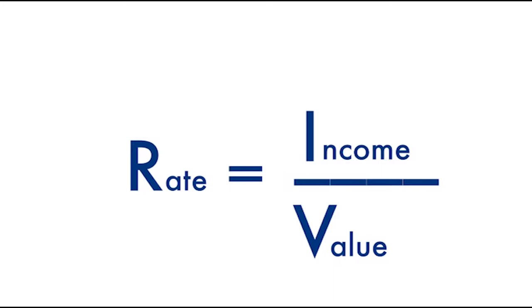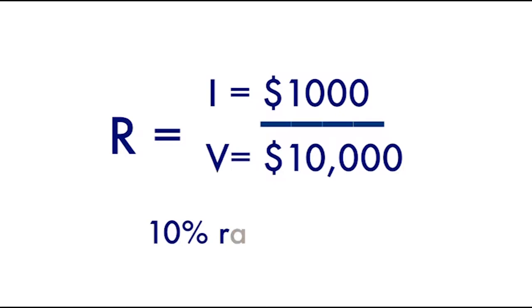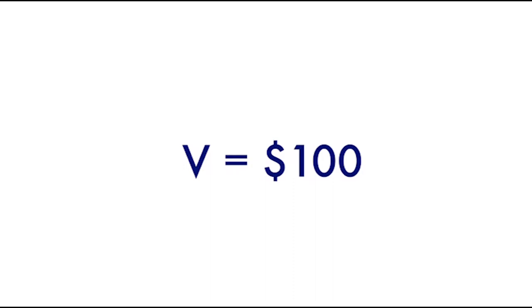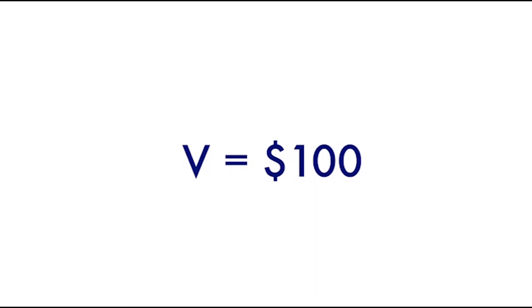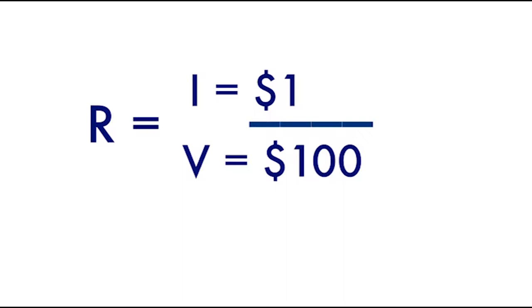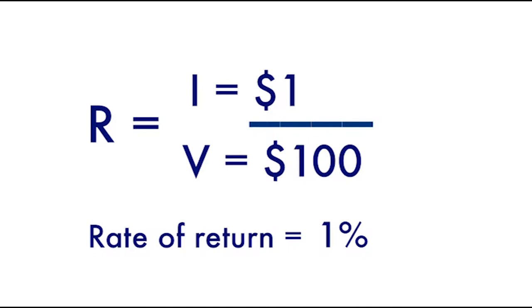In college you might have learned the IRV formula: Income equals Rate times Value. Moving the equation around with a bit of algebra, the rate of return on an investment equals the income divided by the value or investment made. If you have an income of $1,000 per year on an annuity you invested $10,000 in, your rate of return is $1,000 divided by $10,000 — a 10% rate of return. If you put $100 into a savings account and get back $1 in a year, your rate of return is 1%. In real estate, this rate of return is called the cap rate: NOI divided by the sales price.